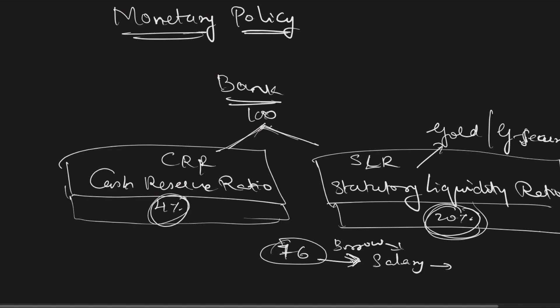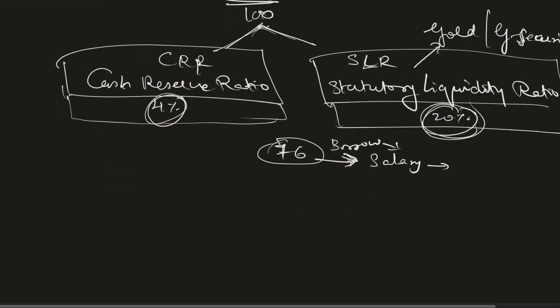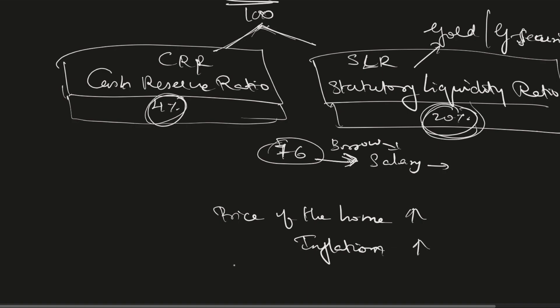When there is more money supply, more money is chasing products. For example, imagine everyone is getting jobs and planning to buy a home. When demand for homes goes up, the price of homes goes up — and that means inflation is rising. When inflation goes up, RBI gets worried because they are the ones printing currency notes, and high inflation causes the value of the currency to come down.